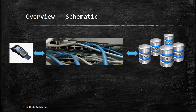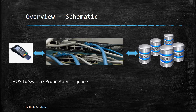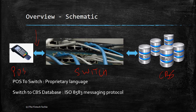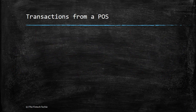A quick overview of how the transaction looks: the switching software sits in between the POS and the CBS. You have the POS machine on one side and the core banking database on the other, with the switching software in the middle. The POS-to-switch layer uses a proprietary language, while the second layer is where ISO 8583 messages are exchanged.